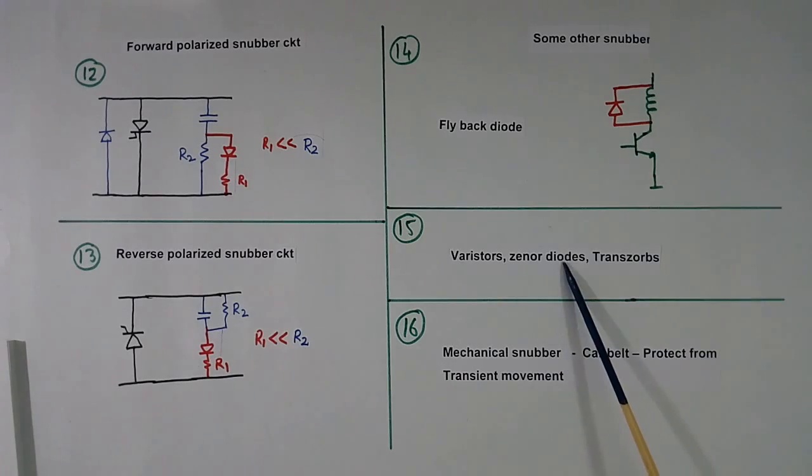Then there are Zener diode, transistor also act like attenuator or over voltage. Then there are mechanical snubbers. Car seatbelt is basically one example which protects us from transient movement. When body has sudden movement, that time car seatbelt will come in the picture. It will not allow our body to move forward.